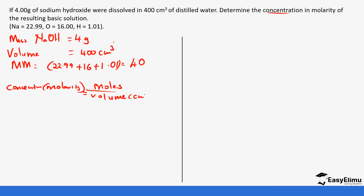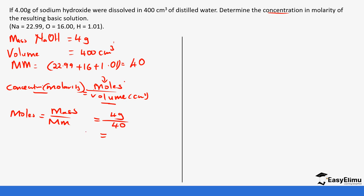Remember, volume has been given in centimetres cubed, so we have to do the conversions. For molarity we need moles, but moles have not been given directly. This is where interconversion between mass, moles, and molecular mass comes in. So moles equals mass over molecular mass, which is 4 grams over 40, giving us 0.1 moles.